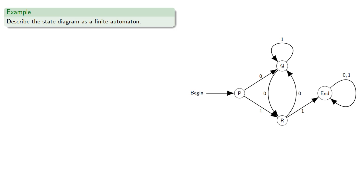So, for example, let's try to describe the state diagram shown as a finite automaton. Our states are where we could be in the process.